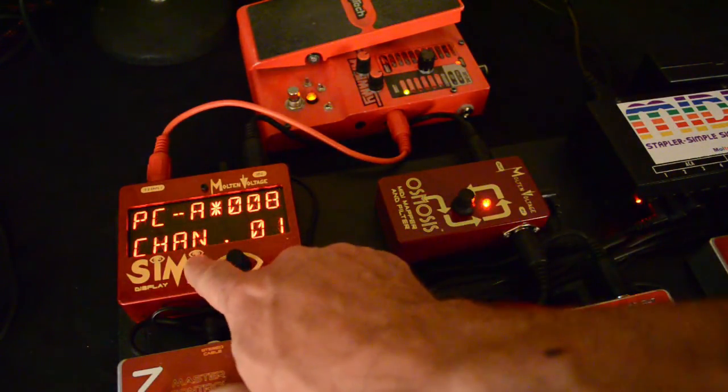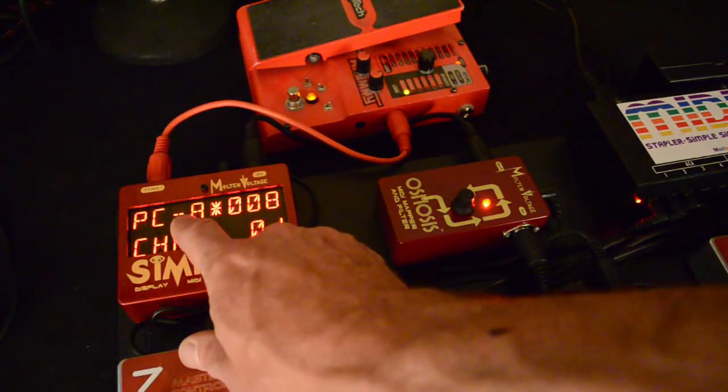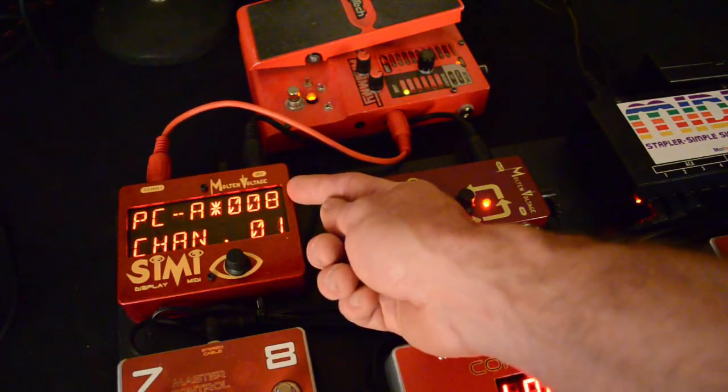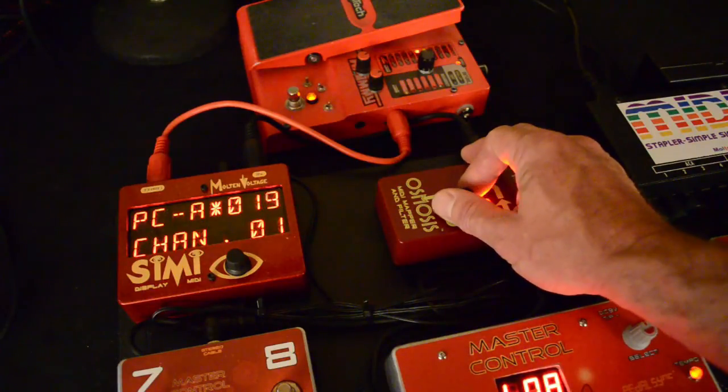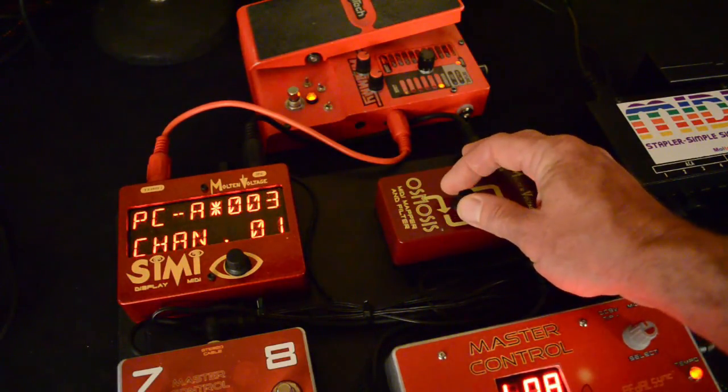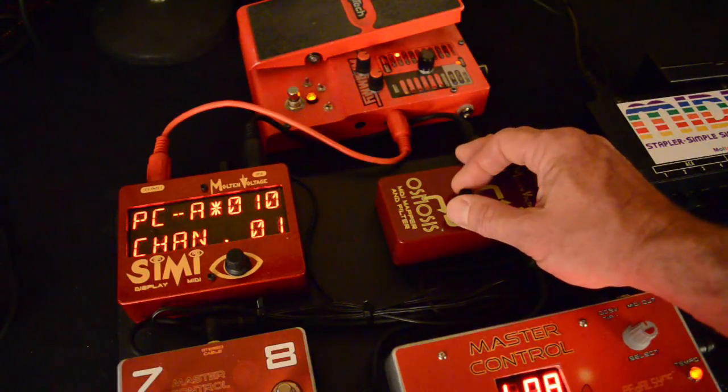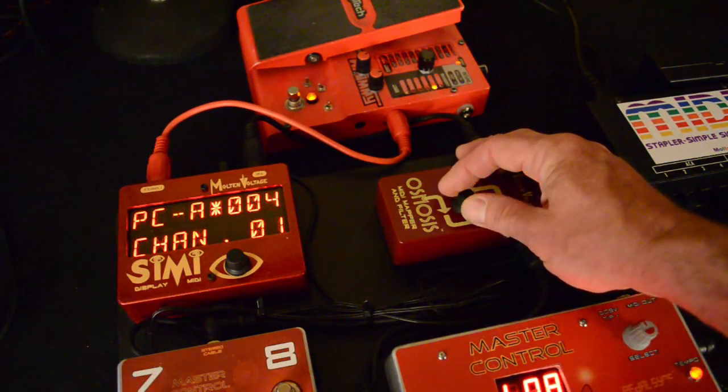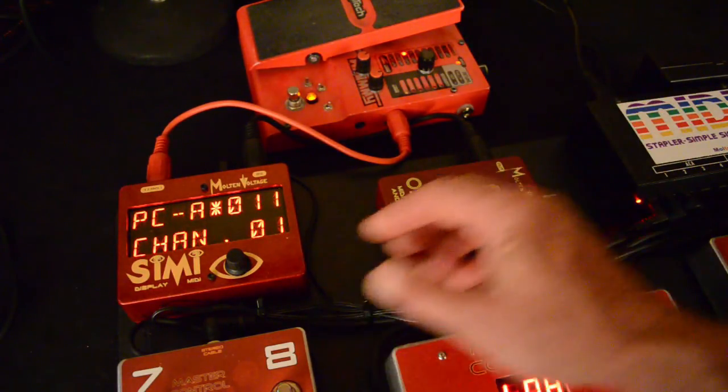So the first thing we have here is Program Change A. They're A through E. So it's A, B, C, D, E. This is the outgoing Program Change number. It gets Program Change 8 coming in. What's it going to send out in response? Well, whatever we want it to. And you can see over on the Whammy here, it also, as we're adjusting anything, it sends out the change in real time too, so you can hear what's happening on your other device.